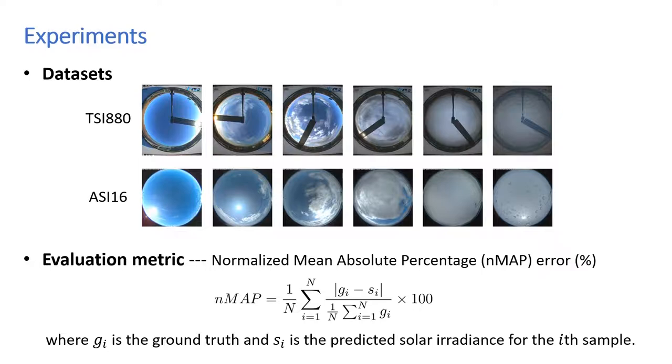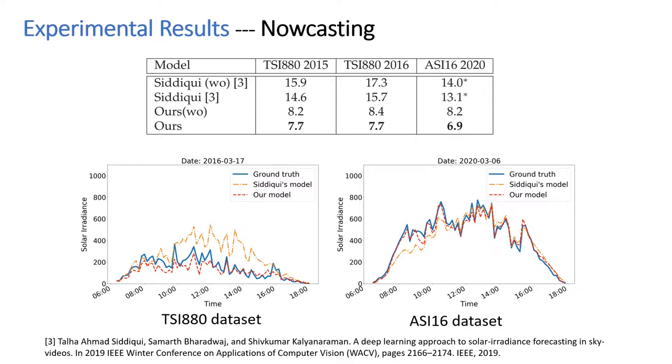We evaluate our method on two publicly available datasets, TSI880 and AS116. The performance of our models is evaluated using the normalized mean absolute percentage error. For the nowcasting task, our transformer-based nowcasting network consistently achieves better performance than previous CNN-based nowcasting methods.